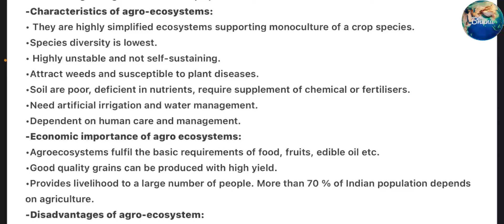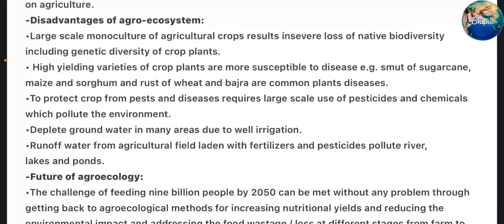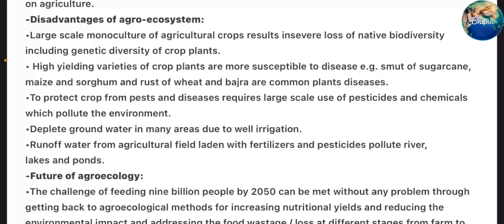Economic importance of agro-ecosystems: Agro-ecosystems fulfill the basic requirements of food, fruits, edible oils, etc. Good quality grains can be produced with high yield. They provide livelihood to a large number of people — more than 70% of the Indian population depends on agriculture. Disadvantages: Large-scale monoculture results in severe loss of native biodiversity, including genetic diversity of crop plants. High-yielding varieties are more susceptible to diseases, e.g., smut of sugarcane, maize and sorghum, and rust of wheat. Protecting crops from pests and diseases requires large-scale use of pesticides and chemicals which pollute the environment, deplete groundwater in many areas due to well-irrigation, and runoff water laden with fertilizers and pesticides pollutes rivers, lakes and ponds.